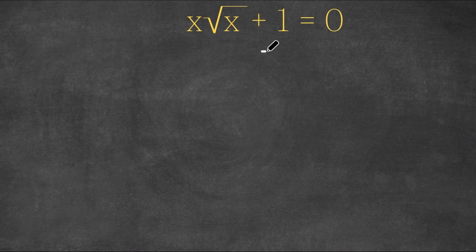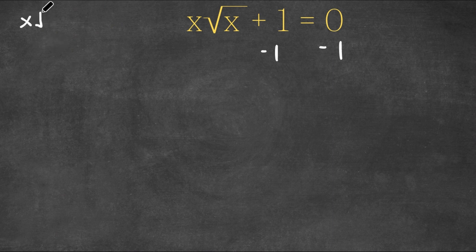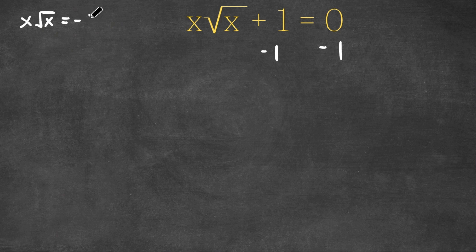What I'm first going to do is subtract one on both sides to move this one to the right-hand side. So now we get x times the square root of x is equal to negative one.